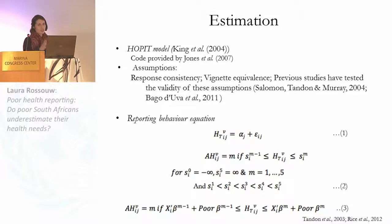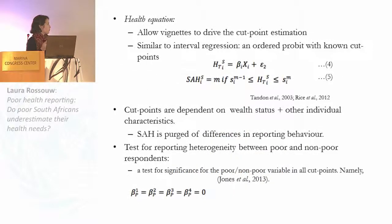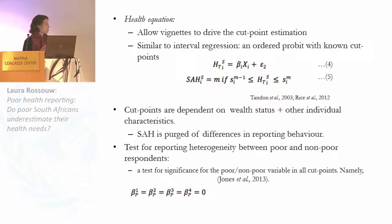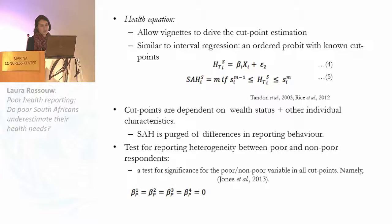In the second part of the model, you use the entire sample — a person's evaluation of their own health in the specific domain — and fix the cut points estimated from the reporting behavior equation onto this regression of overall self-assessed health onto individual characteristics. This produces something like an interval regression — an ordered probit with known cut points — estimated jointly. The result from the second equation is a self-assessed health variable that has been purged of differences in reporting behavior, since the cut points are dependent on wealth status and other individual characteristics.